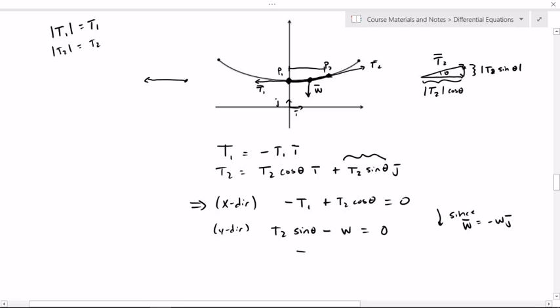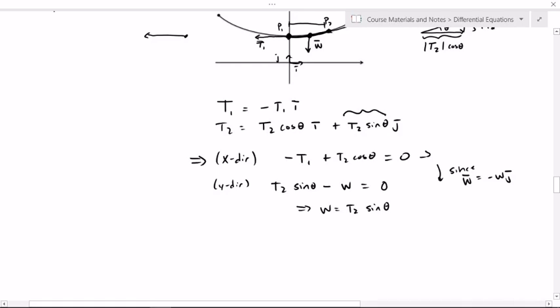So from this, I could say that w is T2 sine of theta. They are equal to each other. So here's where I get creative now. From here, I know that T1 is T2 cosine of theta. Notice this and this.